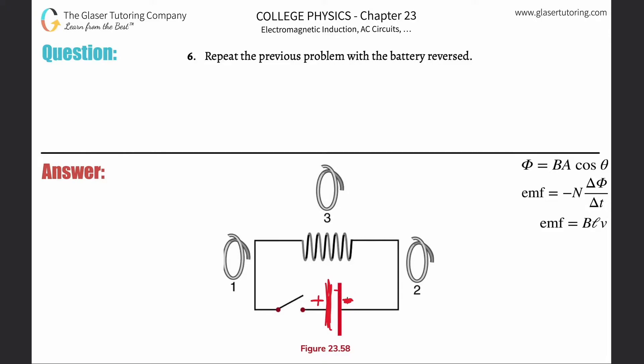And all that's going to happen now is the current is moving in the reverse direction. That's the only thing that's going to change. That though will change the direction of the currents and the direction of the magnetic fields produced. It's only a directional change now. It's literally going to be identical to number five.